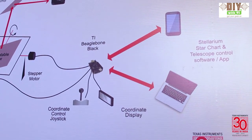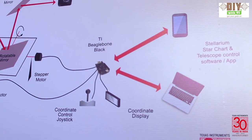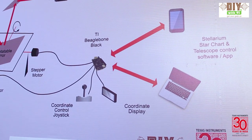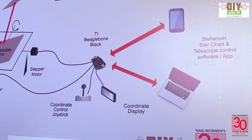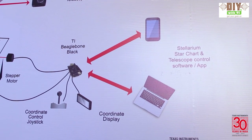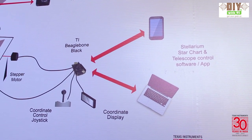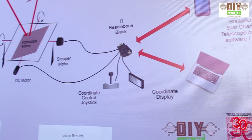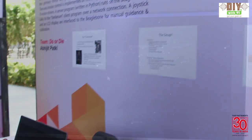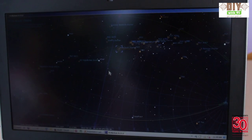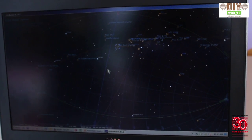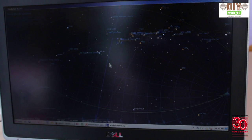The BeagleBone platform interfaces with Stellarium software or an app remotely over a wireless LAN interface. This allows us to remotely go to a particular star or planet that is shown in the software. The software provides a graphical means of selecting a star and even go to a star which is not visible by the naked eye.